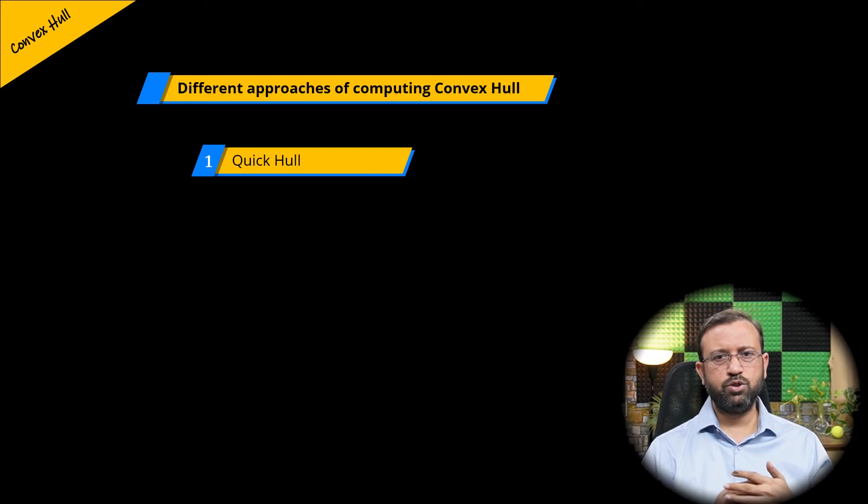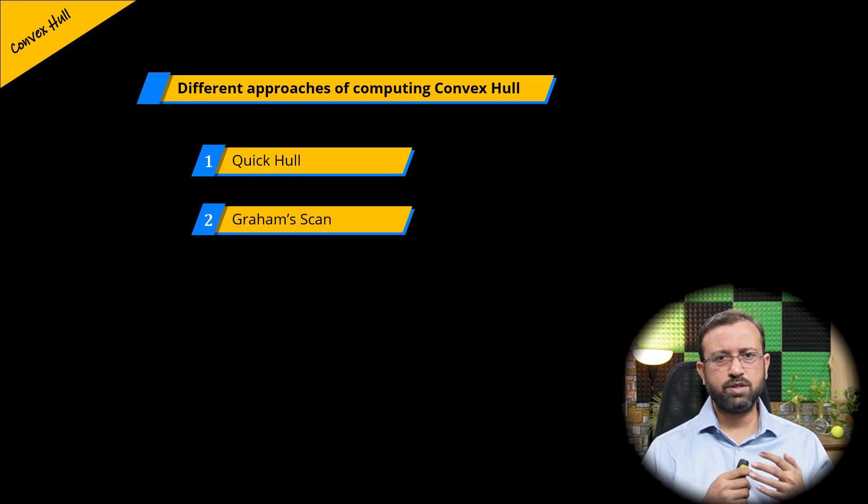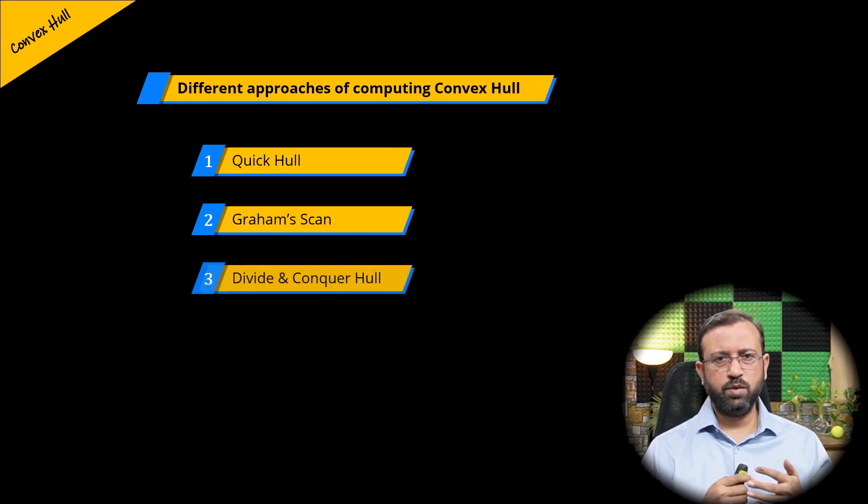The first approach to compute the convex hull is the Quick Hull, which uses an approach similar to quick sort. The second way is known as Graham Scan, which is not based on divide and conquer approach and a totally different procedure is used. And the third way is to use the divide and conquer strategy called the DC Hull.